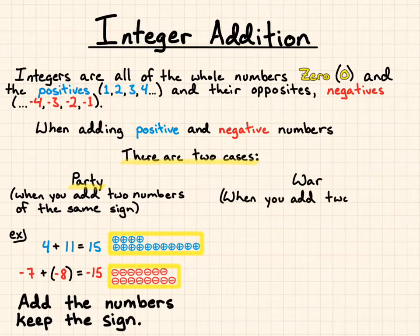Now the other thing is war. What happens when you add two numbers with different signs?